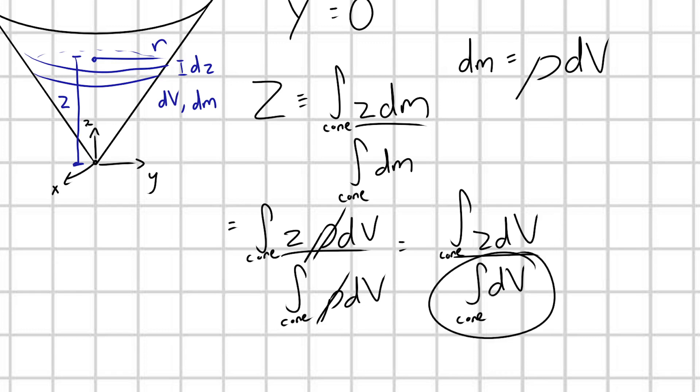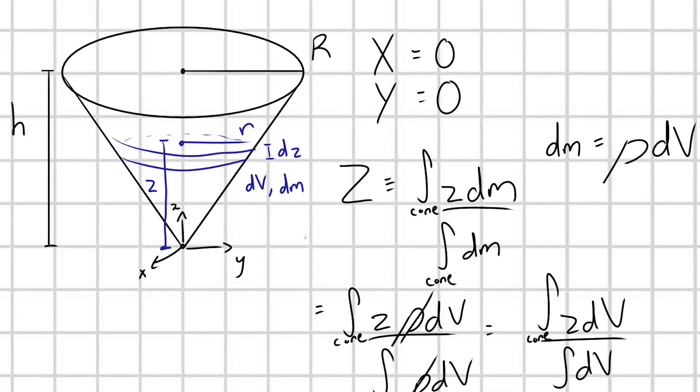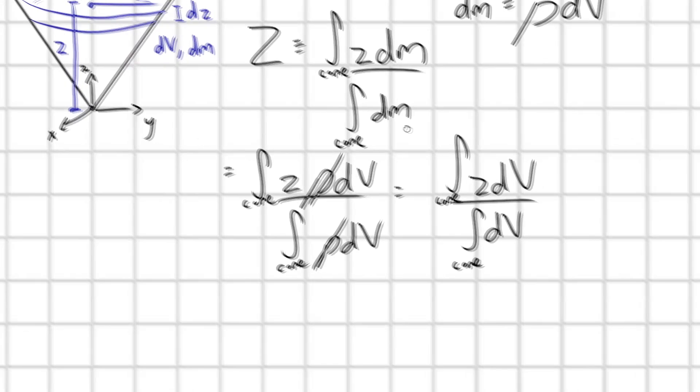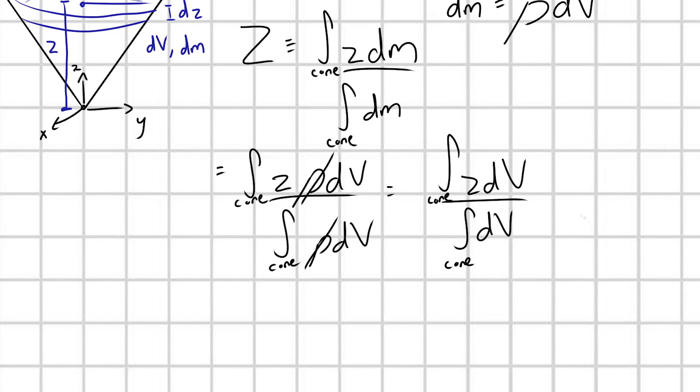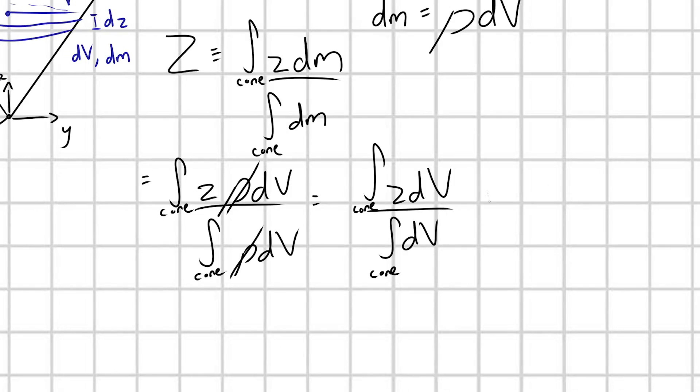Now, this bottom integral here, well, that's just summing up all my volume elements of this cone. That's just the total volume of my cone. And we know the formula for the volume of a cone. Let's just go ahead and use that. We take the area of the base, which is going to be pi times capital R squared for our cone times the height of the cone, which is h, all over 3.